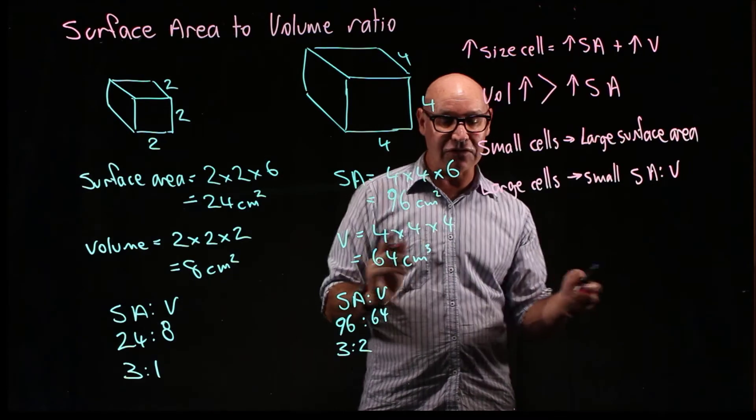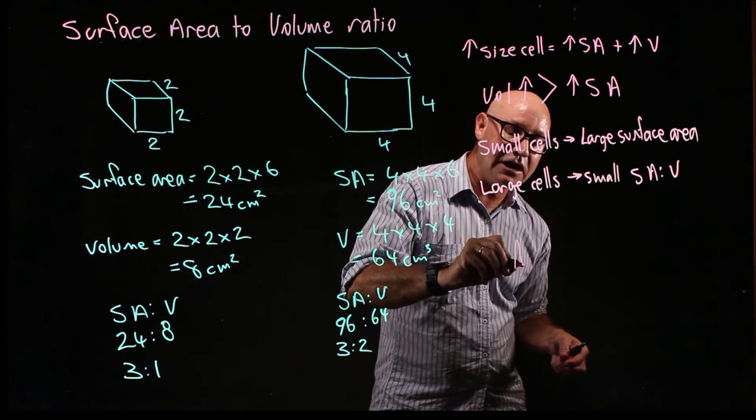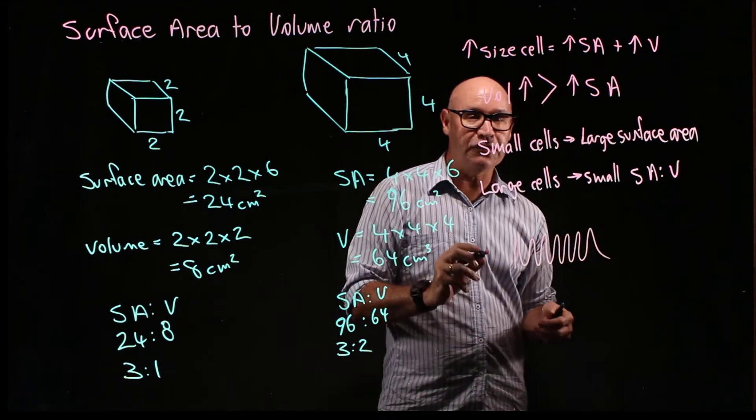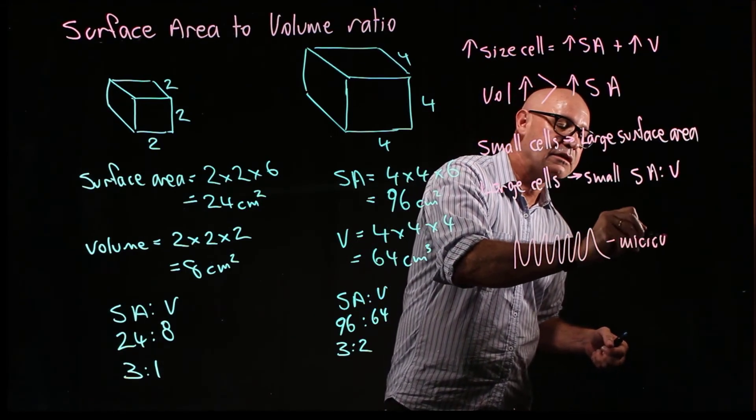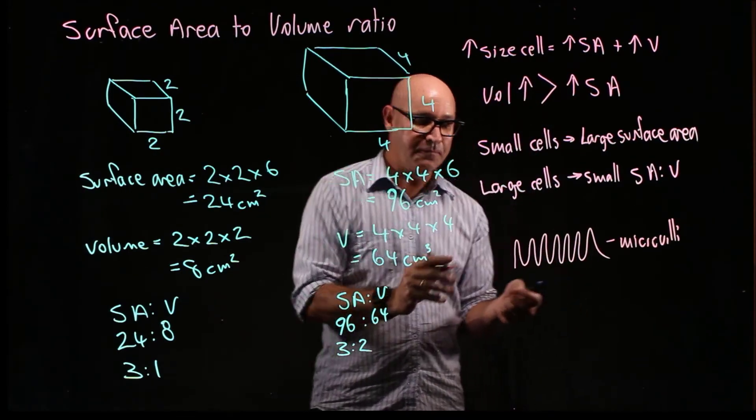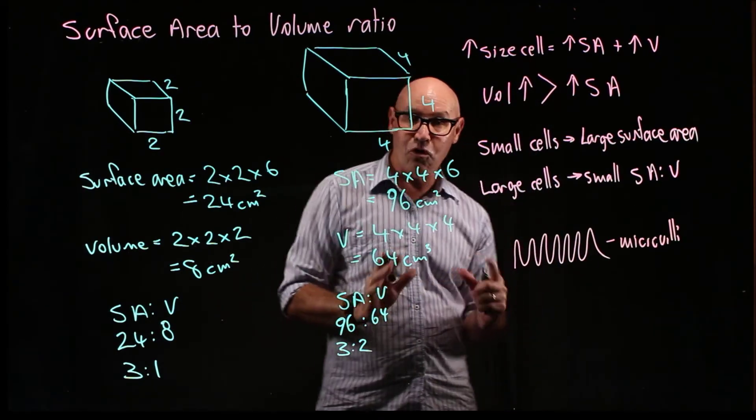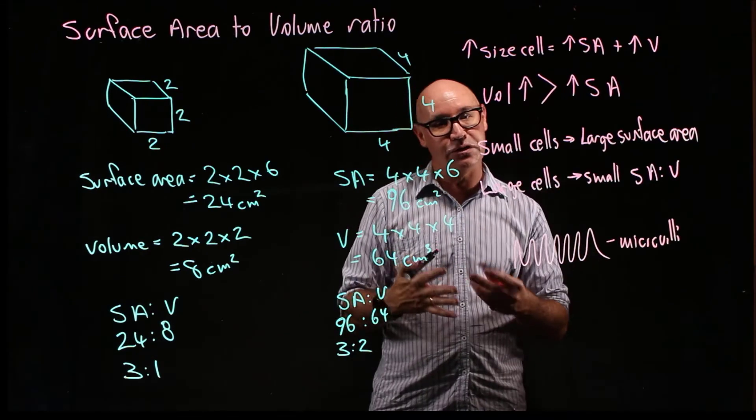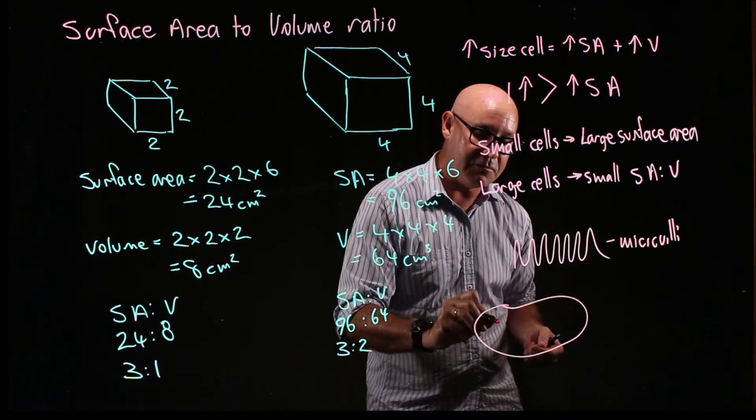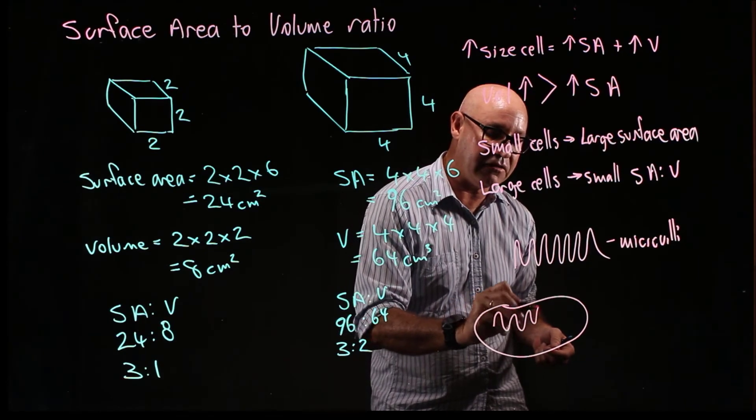Is by increasing its surface area. Things like microvilli increase the surface area of the cell. Organelles, some organelles have highly folded membranes. Like for example, inside the mitochondrion, the internal membrane is highly folded to increase the surface area.